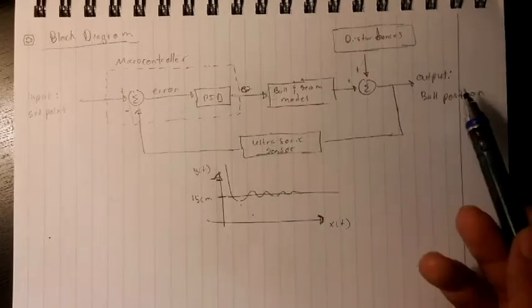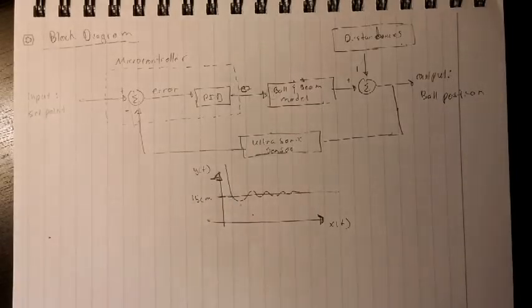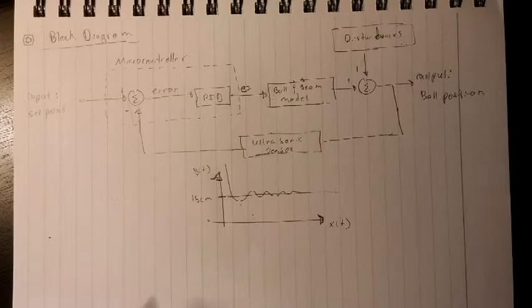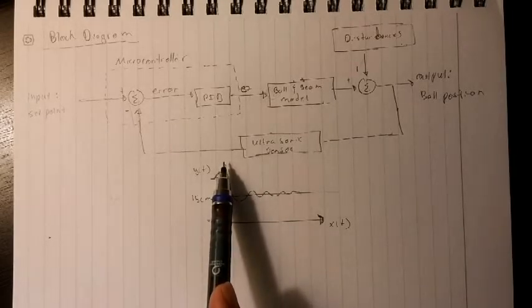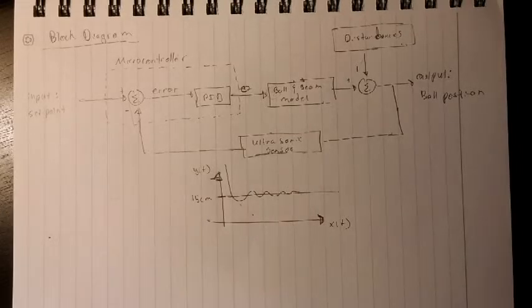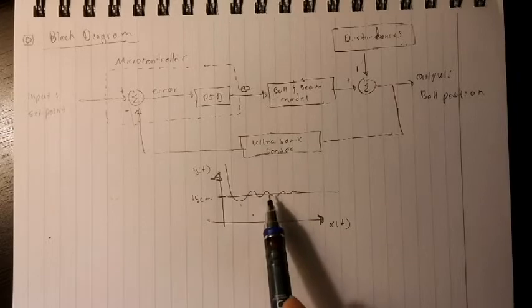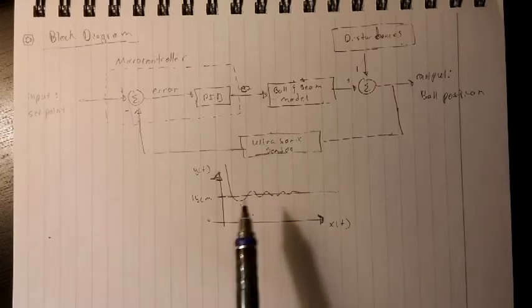On the bottom, if we take our output to be y of t and our input to be x of t, in this case a constant input, our output versus input may look something like this, where the input starts high because the ball enters from the longest part of the rail, and it settles over time. It does have some overshoot,